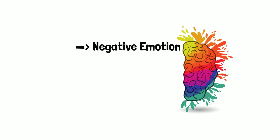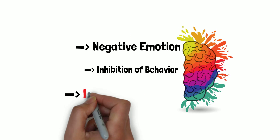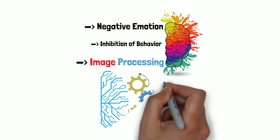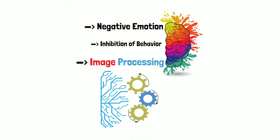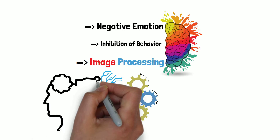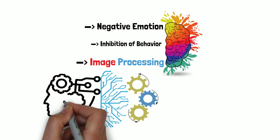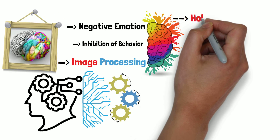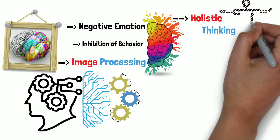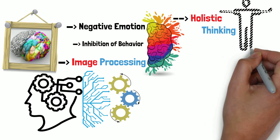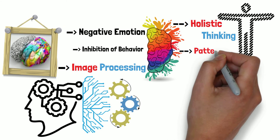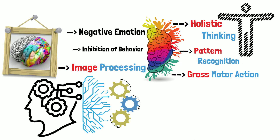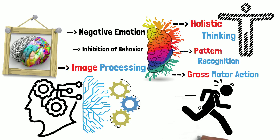Negative emotion. Inhibition of behavior. Image processing. The thing about images is they're fast — a picture is worth a thousand words. "Get the picture" is actually something you say to someone when you mean "do you understand?" — to get the picture is very, very fast. So the right hemisphere manages that. Holistic thinking — that's low resolution thinking that generalizes across instances. Pattern recognition, pattern generation, and gross motor action. Freeze and get the hell out of there — that's gross motor action. The right hemisphere is very good at that.